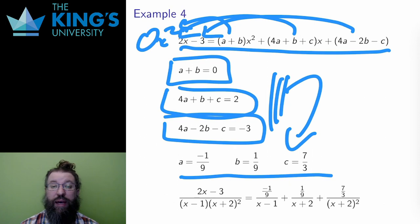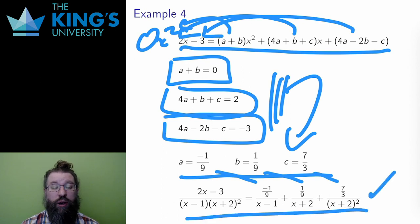And finally, I put these back into the original form. So here is the complete result, the partial fraction decomposition of a rational function where one of the factors has a multiplicity higher than 1.